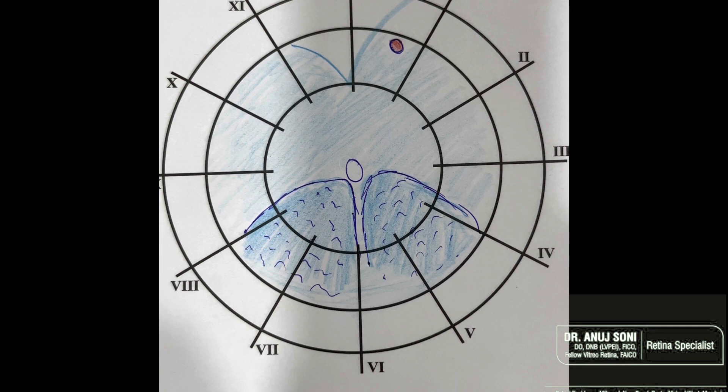In a case of a near total retinal detachment with a superior wedge of attached retina, the hole is generally present near the highest border.